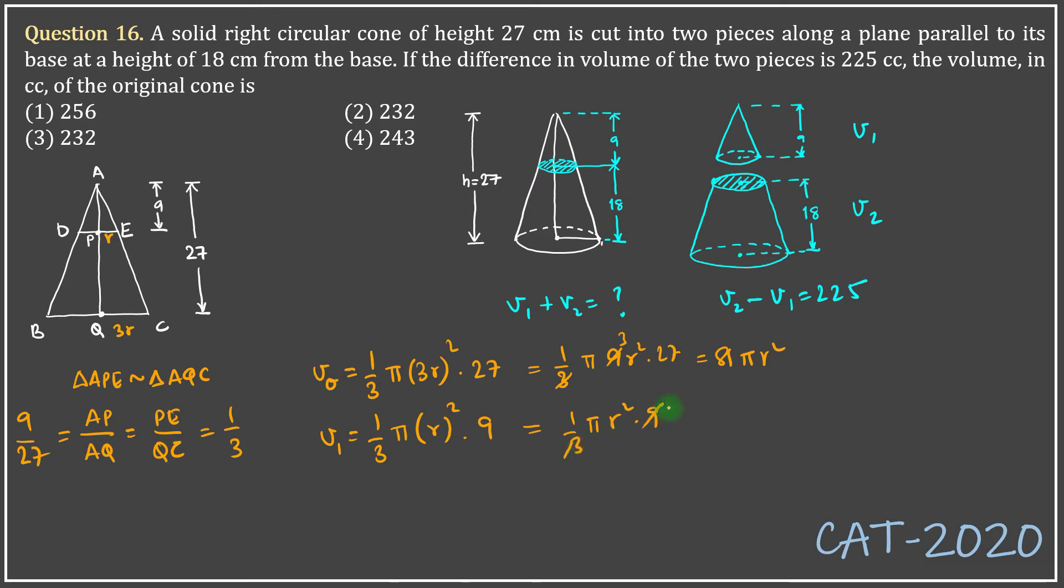Now volume of the frustum v2 is equal to volume of the original cone minus volume of the smaller cone, that is 81πr² minus 3πr², therefore 78πr². Now substituting the value of v2 and v1 in this equation,